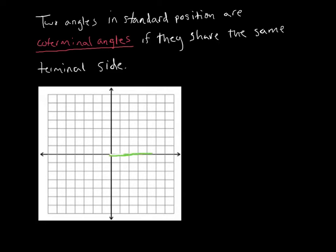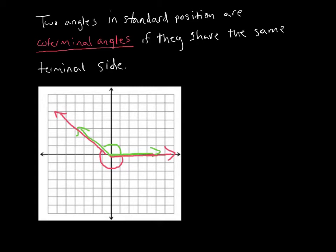Let's draw an angle — we'll put this one in green. If we have another angle that's in standard position and we want to make it coterminal with this one, they have to share the same terminal side. Remember, the initial side must stay on the x-axis for an angle to be in standard position. If another angle goes all the way around and ends up on the same terminal side, these would be considered coterminal angles.